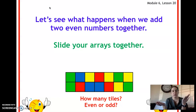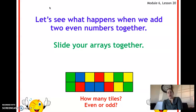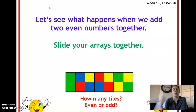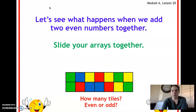So let's see what happens when we add those together. You have two even numbers — six and eight — which are both even. Now we're going to slide them together and add them all together. We have 14 tiles. Is 14 even or odd? 14 is even because there's nothing left over and you have pairs that match up — in this case we'd have seven pairs.